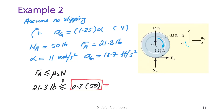We find that 15 lb is not greater than 21.3 lb — in other words, f_A = 21.3 lb is greater than 15 lb.